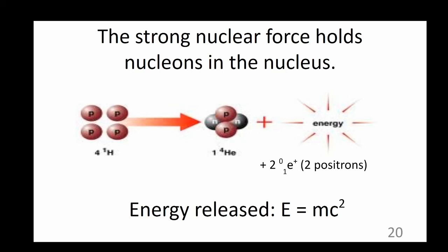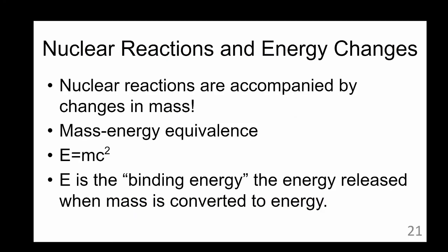In nuclear reactions, mass and the identity of the atoms, the type of the element, are not necessarily conserved. This is very different from chemical reactions, in which atoms and mass are not created nor destroyed. Every type of nuclear reaction is accompanied by a change in mass. This is called the mass energy equivalence, and we can calculate it using Einstein's famous equation. This energy is called the binding energy, and is the energy released when mass is converted to energy.